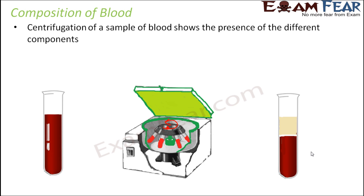As a result, after some time the test tube gets segregated into two halves. The lower part contains the denser components of blood, and the upper part contains the lighter components. The denser components remain at the bottom because they are heavy and cannot move as much, while the lighter components rise to the top.